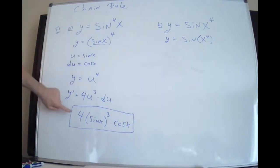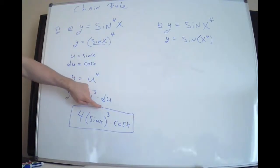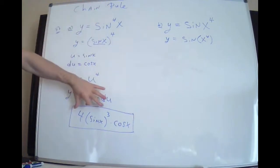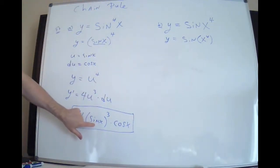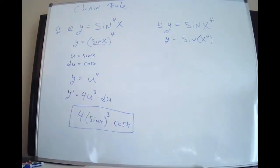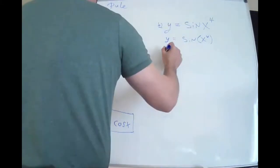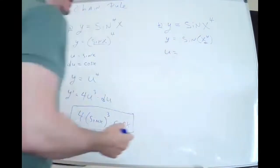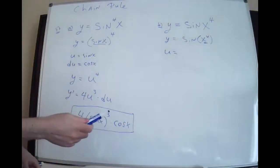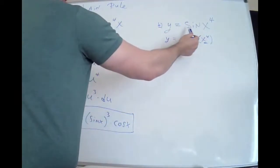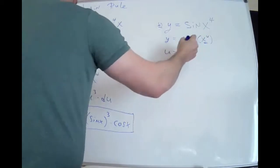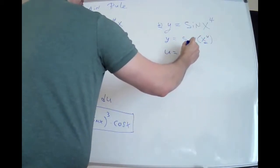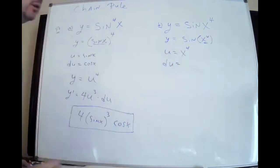The derivative of the outside is 4 in the front, power becomes 3 — multiply by the power and subtract one. That's the derivative of the outside. This part doesn't change. Then the chain rule says you need the derivative of the inside — there it is: cosine(x). For the second example, sin(x⁴), you have to be careful about which function is u. If you pick the wrong u, the whole thing falls apart.